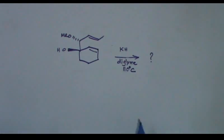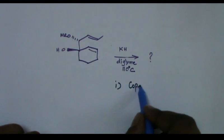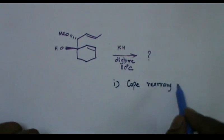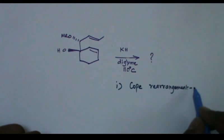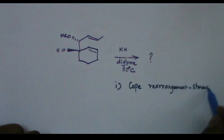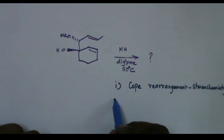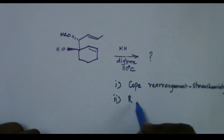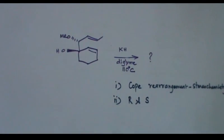Now, which one of these options is correct? In order to solve this, you should know cope rearrangement and its stereochemistry or you can say transition state. Second one, you should know to assign R and S configuration for this compound.